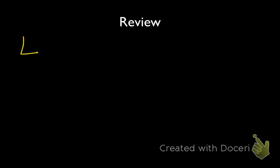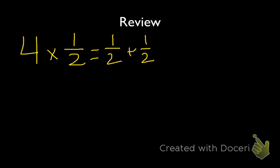Let's review. You already know that if I were to multiply a fraction by a whole number, I could use repeated addition. So if I were to have the problem 4 times 1 half, that's going to be the same as 1 half plus 1 half plus 1 half plus 1 half.